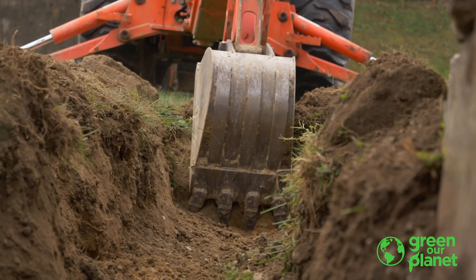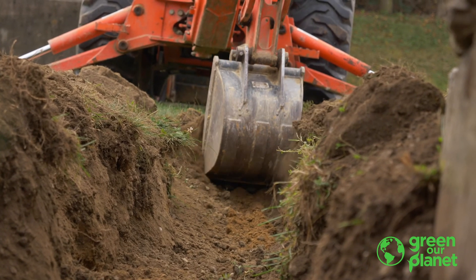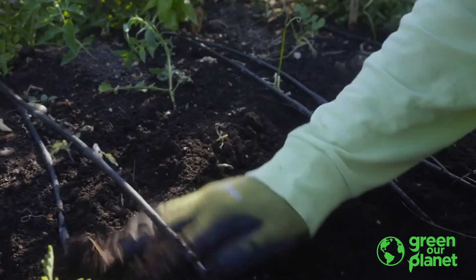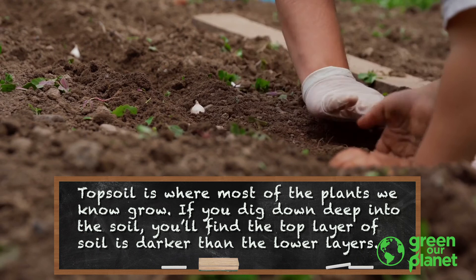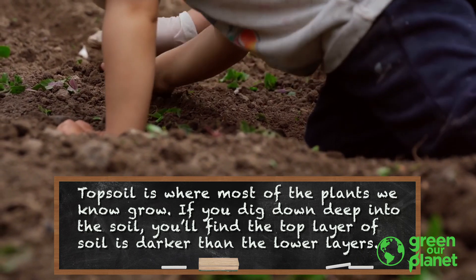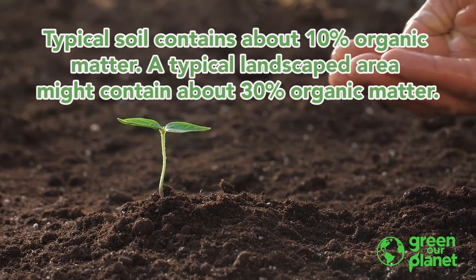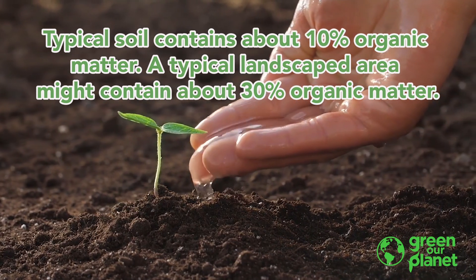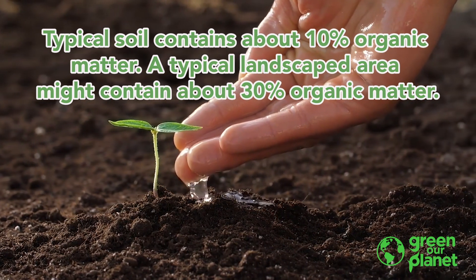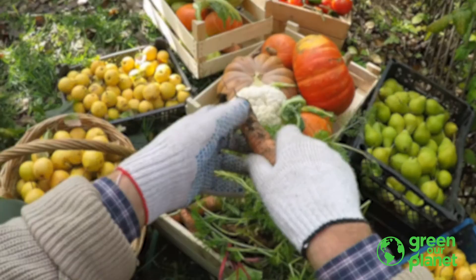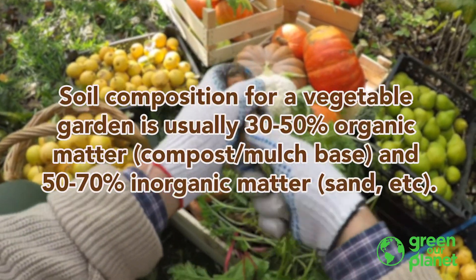If you were to dig down into soil, you would see the difference in colors in the layers. The top layer, where most of the plants grow, is usually a lot darker and richer in color than the layers below — because of all the organic matter that has built up there, which is why we call it topsoil. Typical topsoil is about 10% organic matter; in a highly maintained landscape, about 30%. In our vegetable gardens, we like to maintain about 30 to 50% organic matter content to keep the soils healthy.